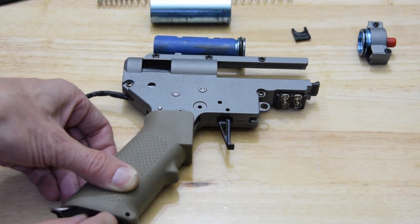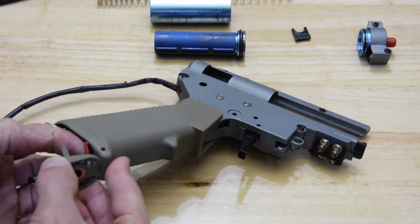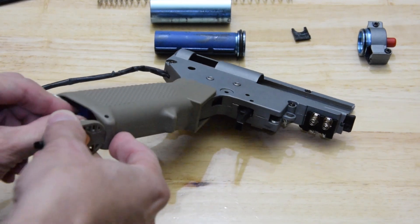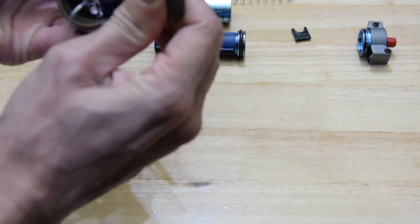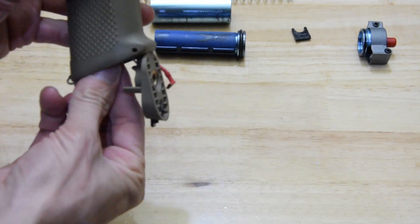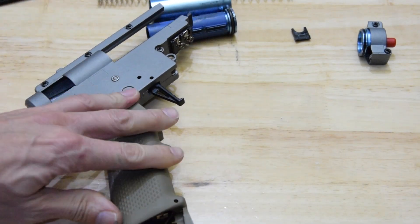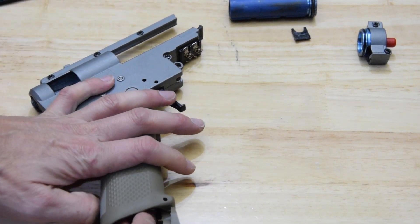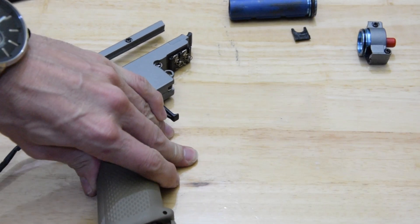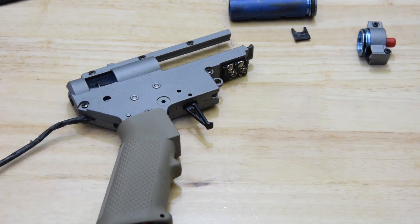I'm gonna start by pulling the motor out. This door on the bottom of this grip is both a gift and a curse. It's good that it's quick to open, but it gets in the way when you're trying to pull the motor out. There we go.